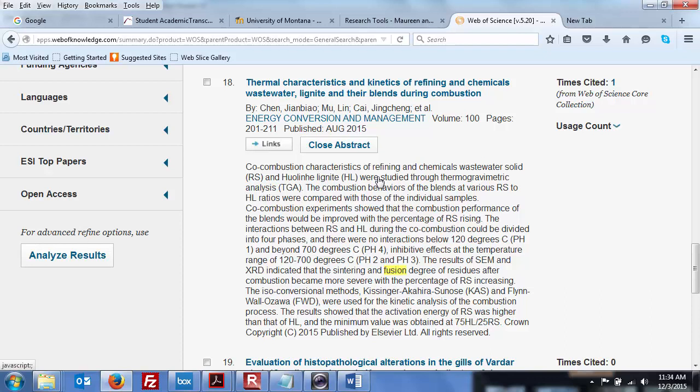So, that just means put in more chemicals, wastewater, et cetera. The reactions between the RS and the HL during the co-combustion could be divided into four phases. No interactions below 120 degrees C. So, and it's the same thing. It's the same thing you see in your fireplace. If you've got a bunch of wood and paper sitting in there and a bunch of 50-degree air in the living room, it's not going to combust. You add that little bit of heat to it with your lighter. Once you hit a certain critical temperature, then the reaction takes off.